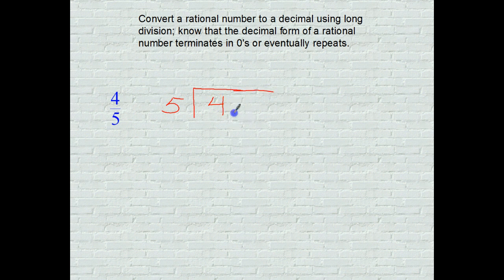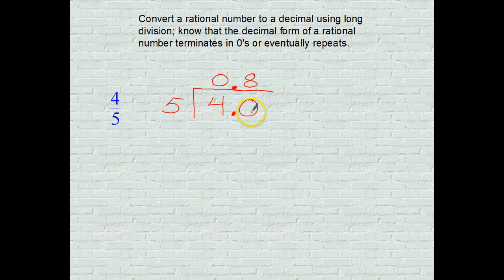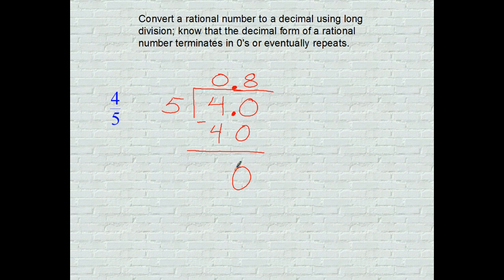So you are going to add a decimal, bring it straight up and add a zero. 5 goes into 4 zero times. 5 goes into 40 — so you are going to put the 8 above the last digit that it goes into. 5 goes into 40, 8 times. 8 multiplied by 5 is 40 and you subtract. 40 take away 40 is 0, which means this is a terminating decimal — remainder of 0. Final answer: 8 tenths.